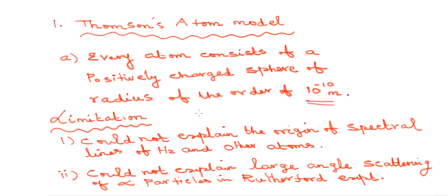What are the limitations of Thomson's atom model? The first limitation is: it could not explain the origin of spectral lines of hydrogen and other atoms. This atom model should explain the reason for spectral lines — when light passes through hydrogen or other atoms, there is a splitting of lines — but it could not explain this.